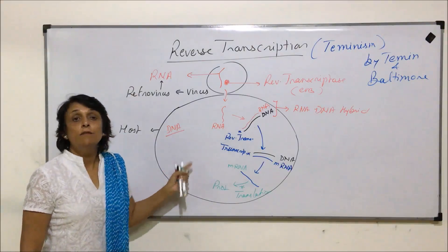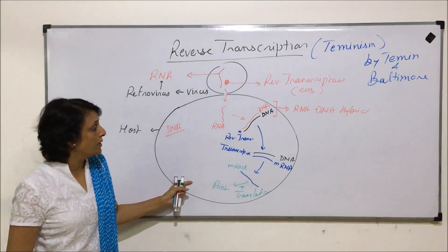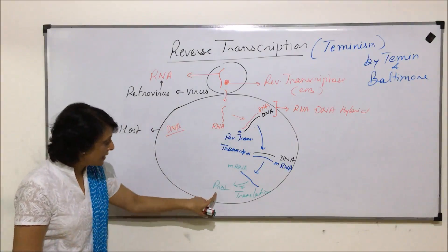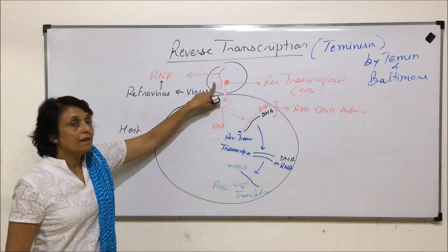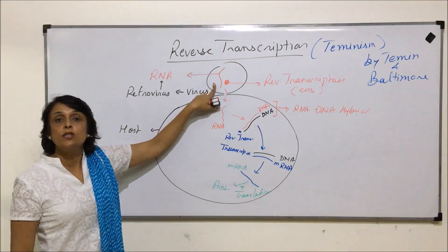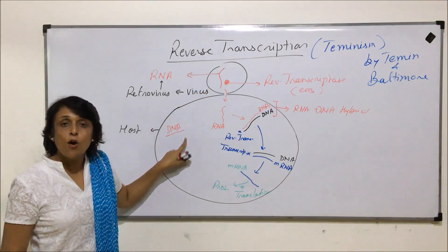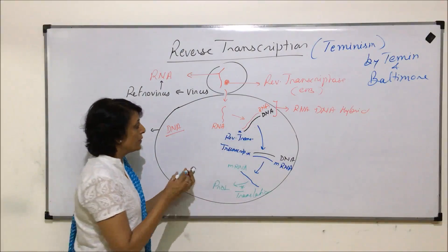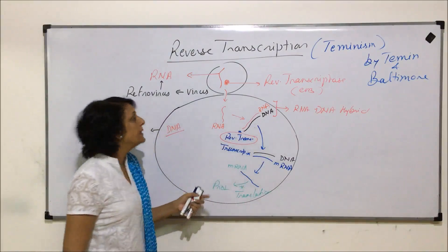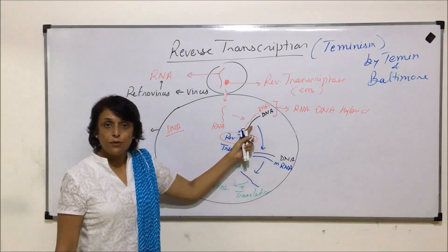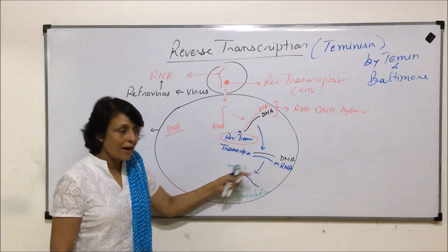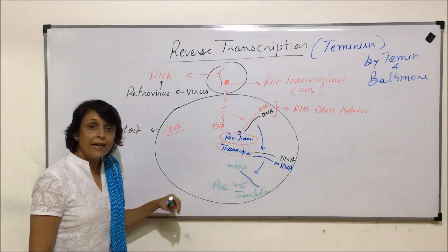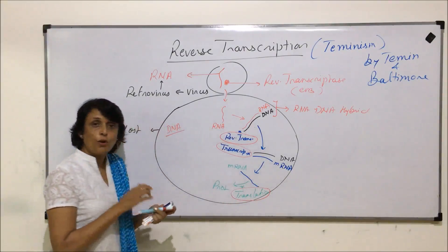The proteins synthesized are the viral proteins, because the information has come from the viral genetic material. To recap: the RNA-containing virus undergoes reverse transcription with the help of reverse transcriptase to form a DNA molecule. This DNA synthesizes mRNA by the regular process of transcription, and this mRNA then helps in formation of protein by translation.